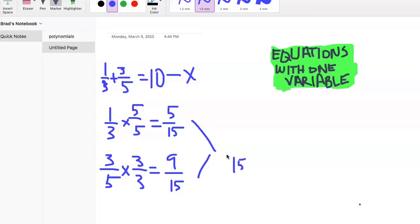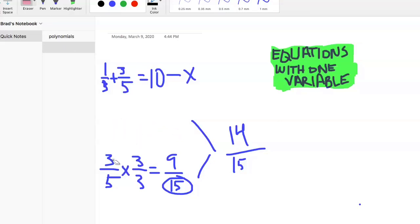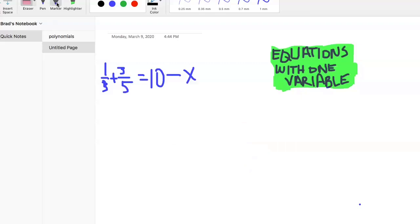When we add 5-fifteenths plus 9-fifteenths, because the denominator is the same in both, we did that on purpose, we just keep that denominator at 15 but we add the two top numbers, the numerators. 5 plus 9 is 14, so there's our answer 14-fifteenths. Now we know that one-third plus three-fifths equals 14 over 15. So I'm going to put that right here: 14 over 15 equals 10 minus x.